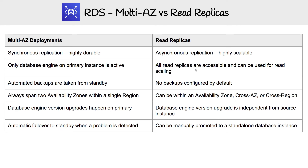Automated backups are taken from the standby on Multi-AZ, whereas with Read Replicas, there are no backups configured by default. Multi-AZ, as the name implies, will span two AZs within a single region. Read Replicas are within a single AZ, but they can be multi-AZ, cross-AZ, or cross-region.